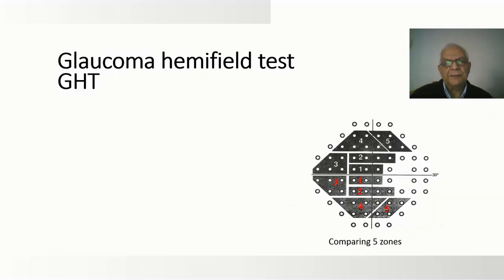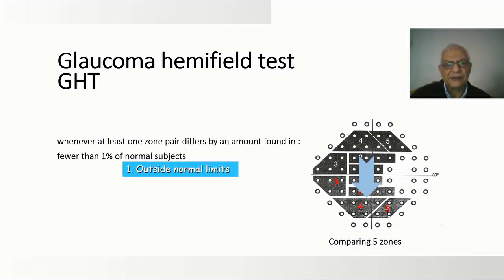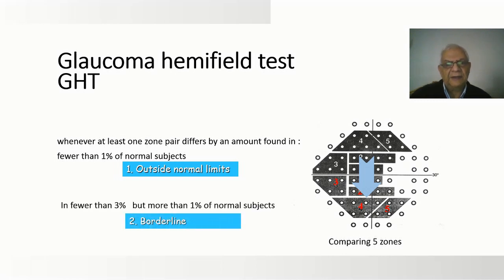The glaucoma hemifield test compares five zones above with similar zones below the horizontal level. Whenever at least one zone pair differs by an amount found in fewer than 1% of the normal population, you get an outside normal limits printout. If the difference falls between 1% and 3%, you get a borderline printout.